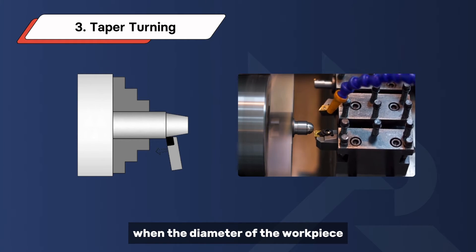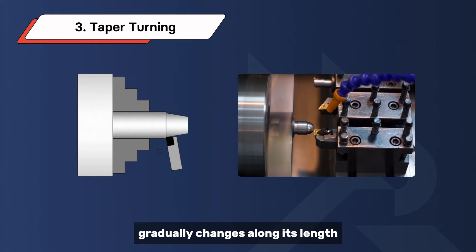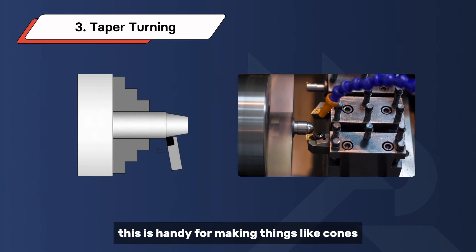Taper turning is when the diameter of the workpiece gradually changes along its length, creating a tapered shape. This is handy for making things like cones, wedges, or even just adding a slight taper to a cylindrical part for better fitting.